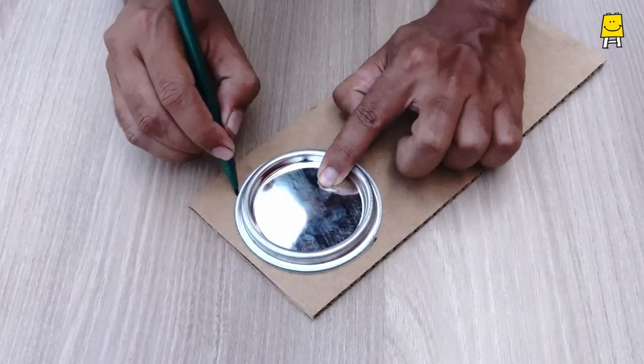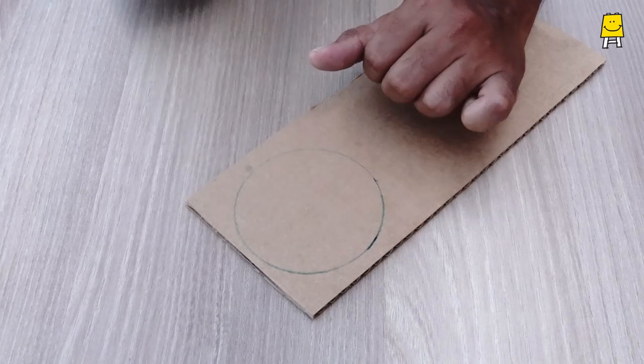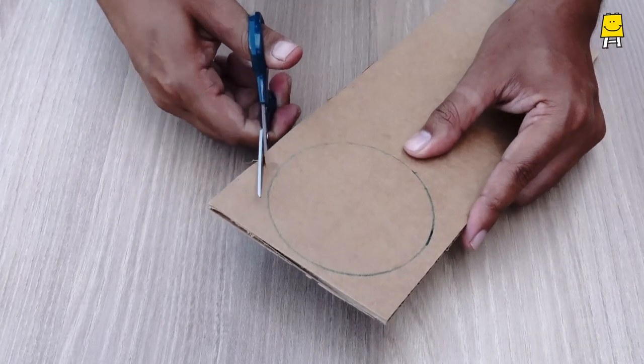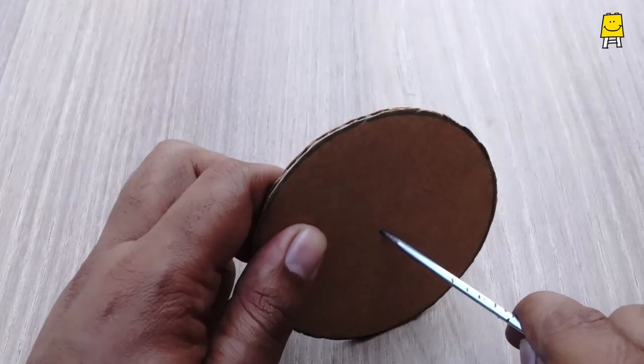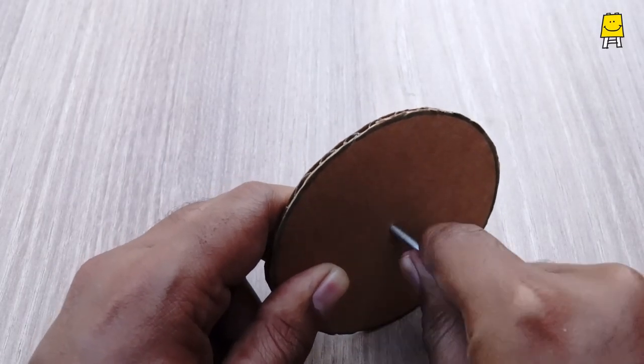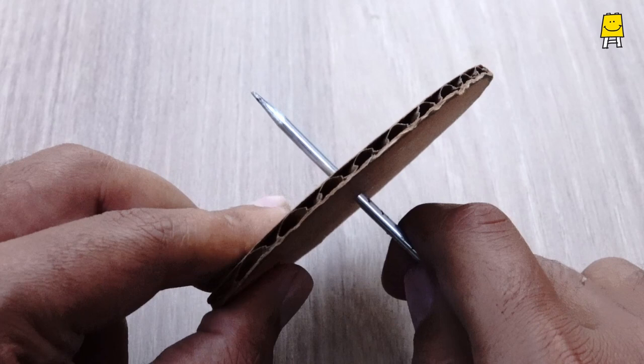Cut out two cardboard discs of equal size. Carefully make holes in the center using a thick needle or a pointed object.